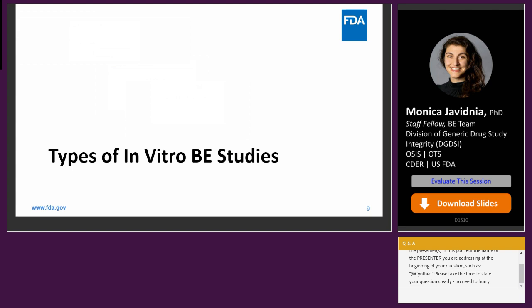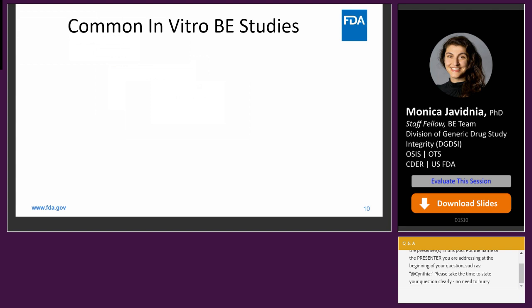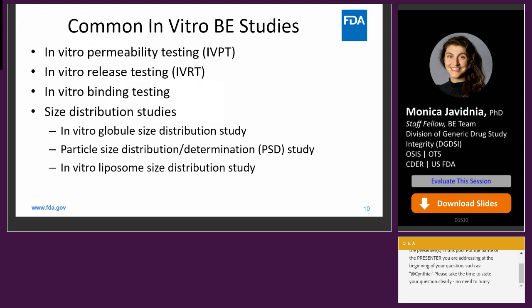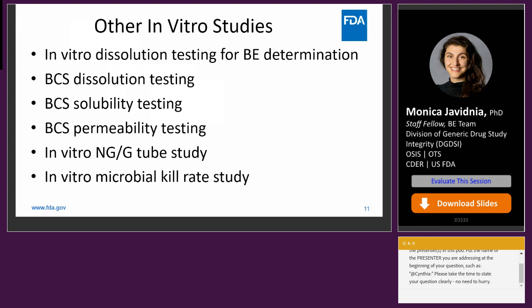There are many types of in vitro BE studies that serve different purposes depending on the type of drug being tested. These include in vitro permeability or release testing for dermatological products, in vitro binding testing for bile acid sequestrants, in vitro size distribution studies (globule, particle, or liposome) for some ophthalmic products, and in vitro aerosol studies using a five-test or six-test battery depending on whether it's an inhaled or nasal product. There are also biopharmaceutics classification system (BCS)-based biowaivers, where BCS dissolution, solubility, and permeability tests can be used in support of the waiver.